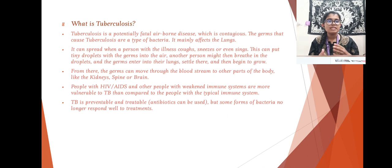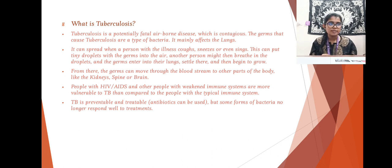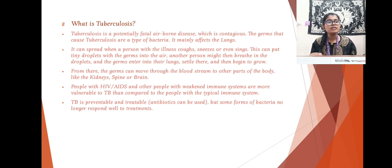People with HIV or AIDS and other people with weakened immune systems are more vulnerable to TB compared to people with a typical immune system. Their weak immune system makes them more vulnerable than the rest of the people with a healthy immune system.